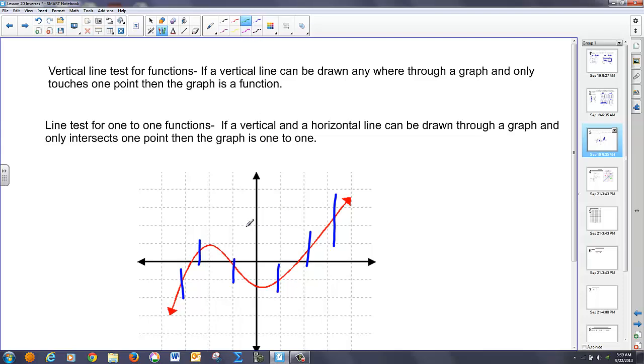If you want to know if it's one-to-one, you draw a horizontal line test, and you draw a horizontal line through anywhere in the function, and if that horizontal line crosses only in one point, you know it's a one-to-one function. Notice, this horizontal line here crosses in multiple points, so this is not one-to-one, but it is a function.